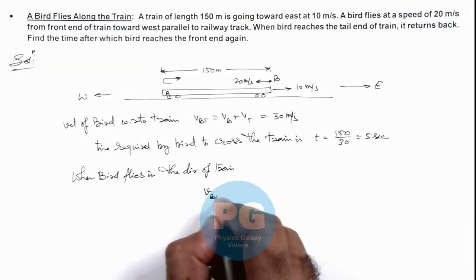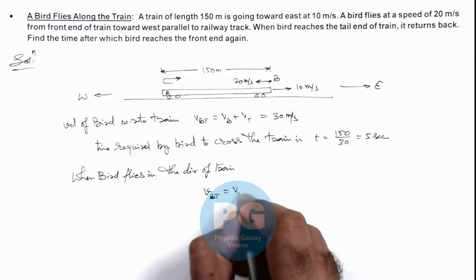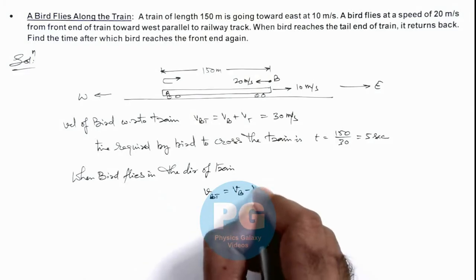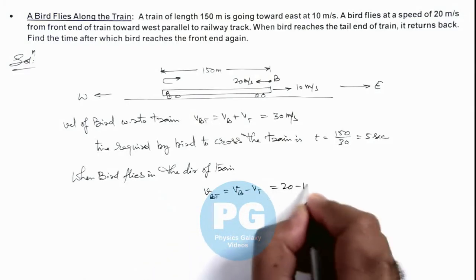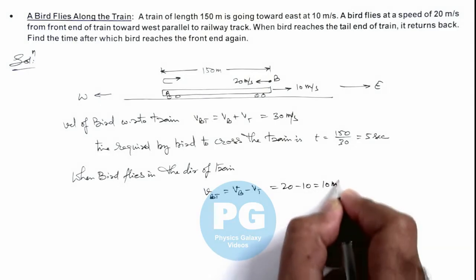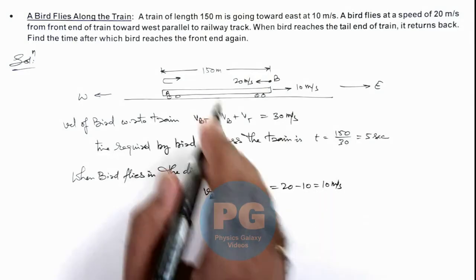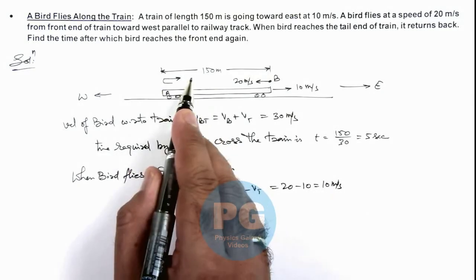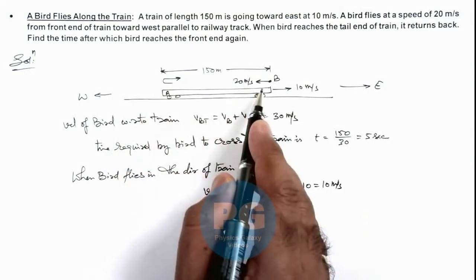Velocity of bird with respect to train we can write in magnitude as VB minus VT. So this will be 20 minus 10, that is 10 meters per second. With respect to the train, now it is traveling in the same direction at 10 meters per second.